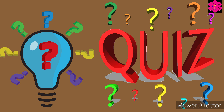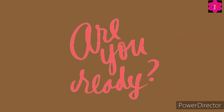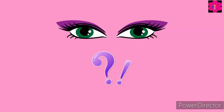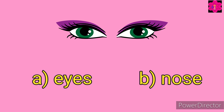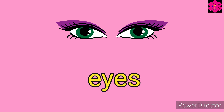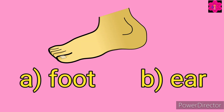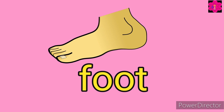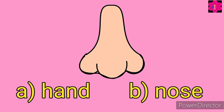Okay kids, now it's quiz time. Are you ready? Tell me, what is this — A: eyes, or B: nose? Choose the correct answer. Which one is correct — A: hand, or B: nose?